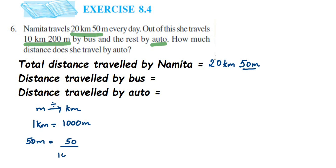There are three zeros in the denominator, so we place the decimal after three digits from the right side. Starting from the right: zero, five — only two digits, so we add a zero — giving us 0.050 kilometers. So 20 kilometers plus 0.050 kilometers equals 20.050 kilometers.